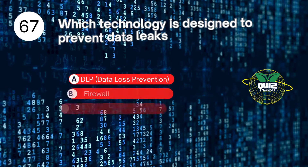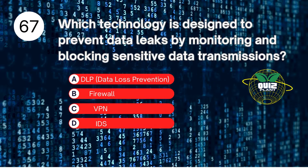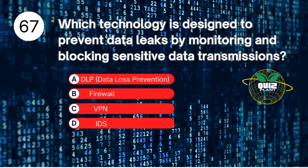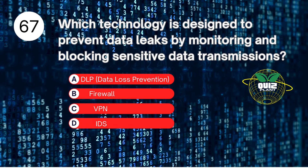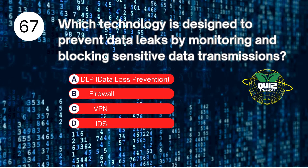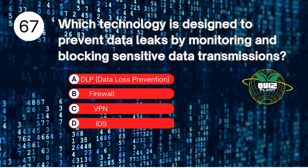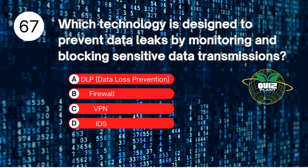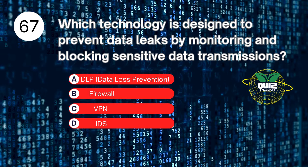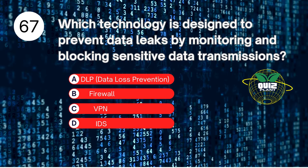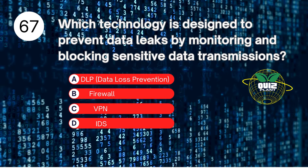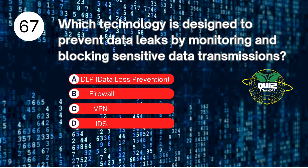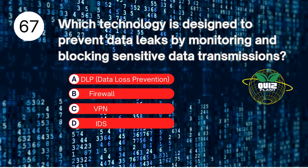Number 67. Which technology is designed to prevent data leaks by monitoring and blocking sensitive data transmissions? A. DLP, data loss prevention. B. Firewall. C. VPN. D. IDS. The answer is A. DLP, data loss prevention.